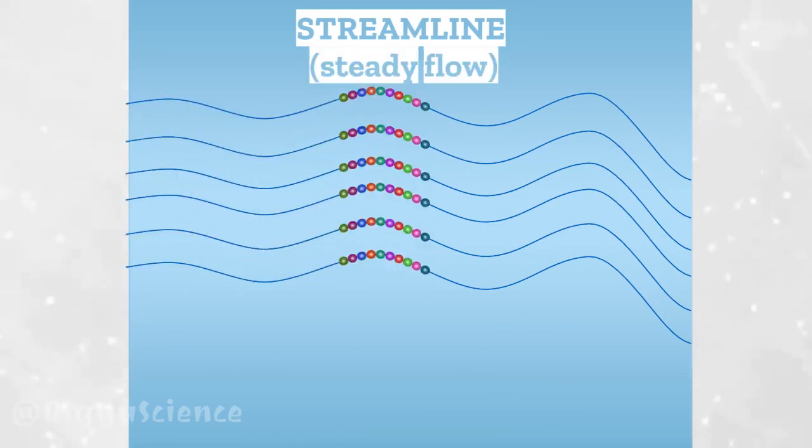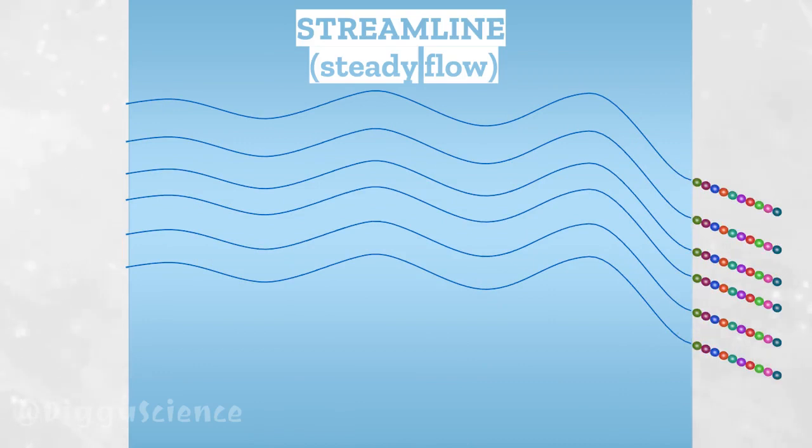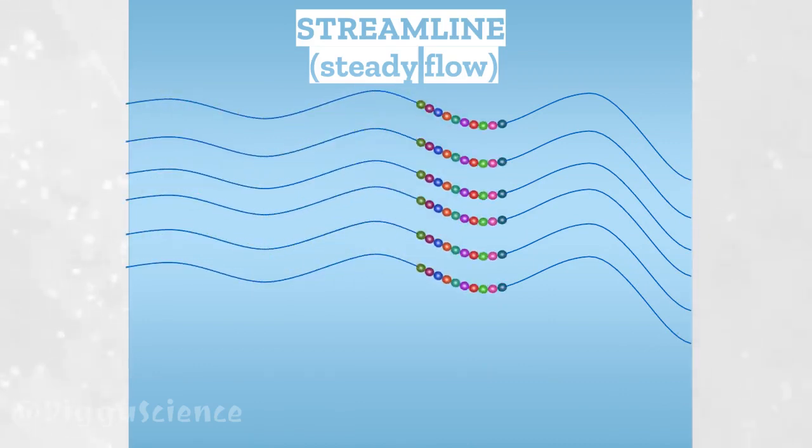Especially in steady flow, path lines, streak lines, and Streamlines will coincide with each other.